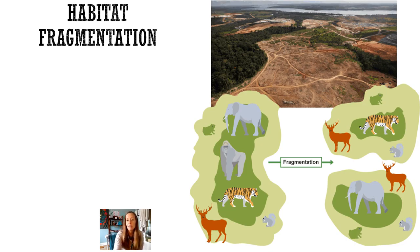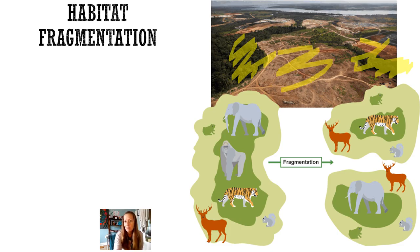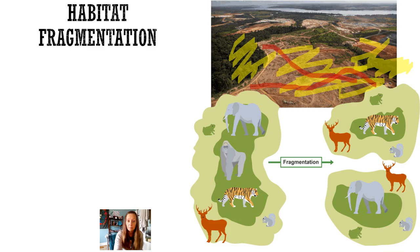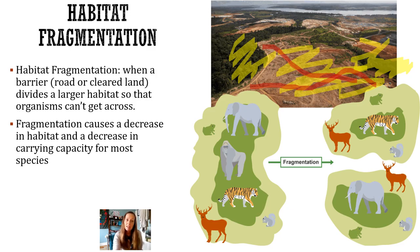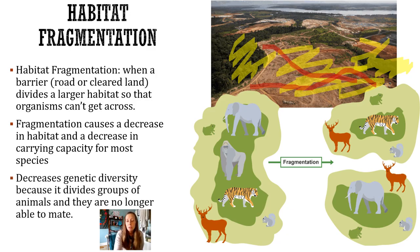The next one is habitat fragmentation. Here's a picture that shows an original large habitat split into two smaller ones. If you look at the picture above, you can see a big clearing in the middle with green trees on the outside — those used to all be one giant area. Then there are roads that break it into even more separate areas. Habitat fragmentation is when a barrier like a road or clearing divides a habitat so organisms can't get across anymore.